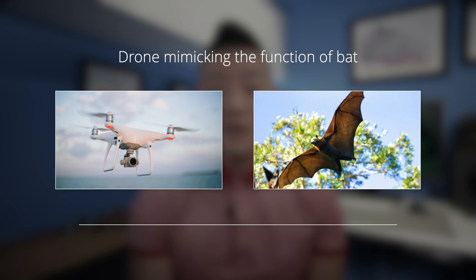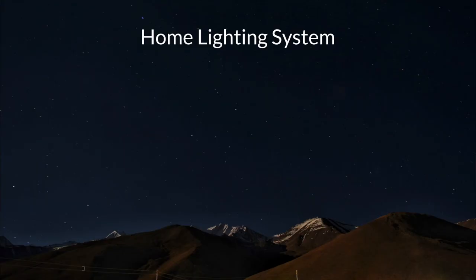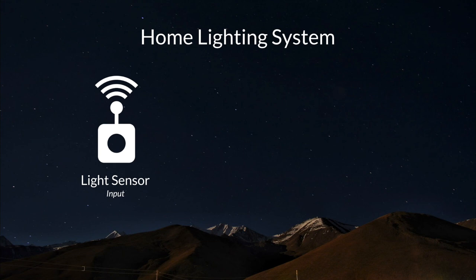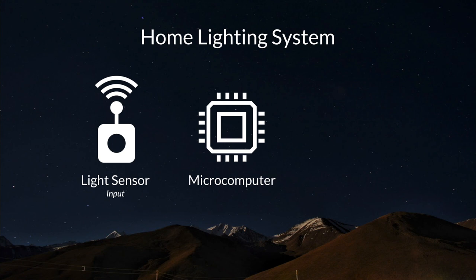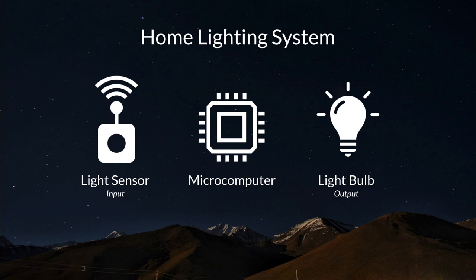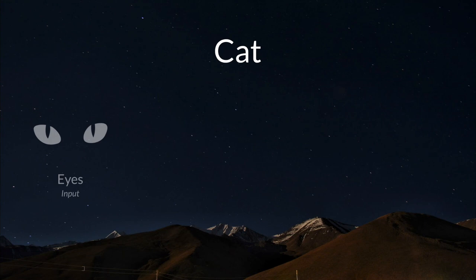I then showed students a home light system to show how devices we use every day gain information through sensors and process the information to generate an output. In this system, the light sensor detects the intensity of the light level in the room and sends that information to the microprocessor. If the light level is too low, especially at night, the microcomputer will signal the lights to turn on. I then showed them an example of a cat seeing a potential predator — its eyes have sense receptors and receive the information, the brain processes it, and as a result helps the cat respond to what it sees.